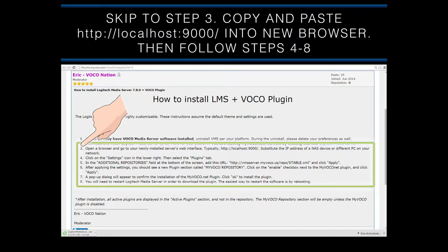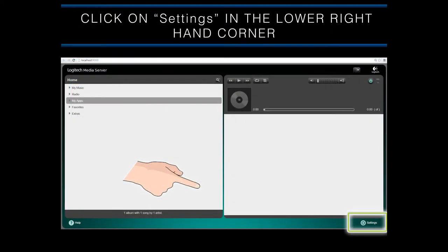You can skip to Step 3 in the instructions. Open a new browser window and copy the entire Local Host 9000 link and paste it into your browser window. If you are using a NAS drive, substitute the IP of the NAS drive instead. This will open the Web Control Panel for your LMS software.